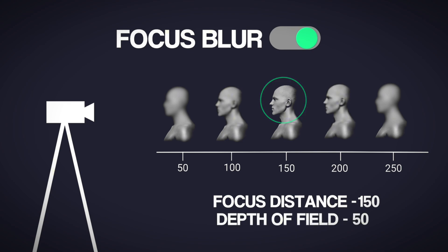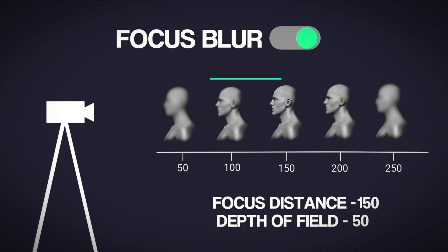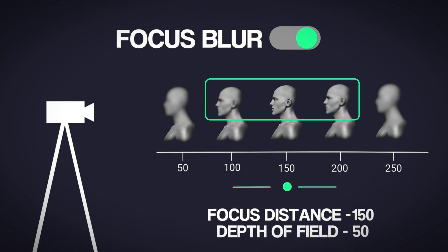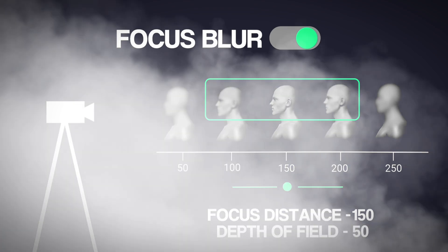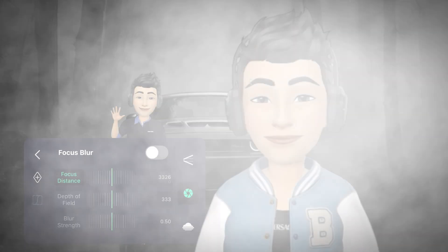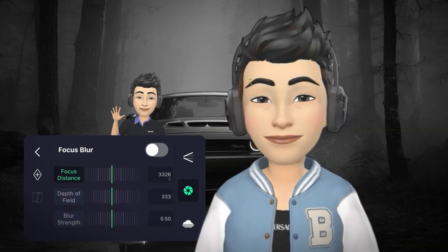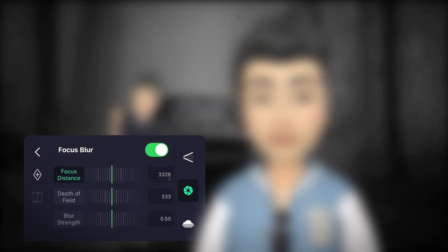This works because their distance from the center person is 50 units each. This creates a softer, more natural focus transition.